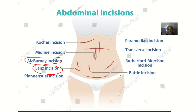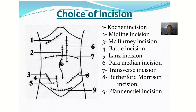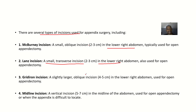Then we have the Gridiron incision. This one is a slightly larger oblique incision in the lower right abdomen, and it is also used for open appendectomy.